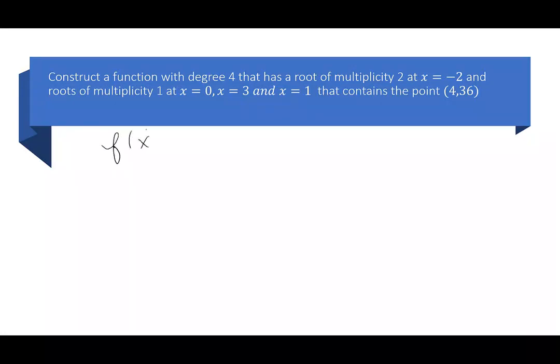So f(x) looks like a. You should start them all with a, right? And then I have (x plus 2) to the power 2. I have just x. That's the x minus 0. I have (x minus 3), and I have (x minus 1).